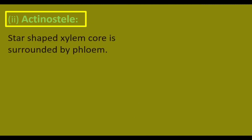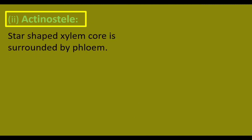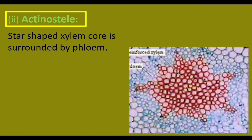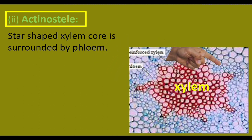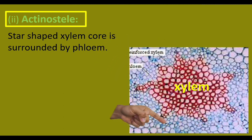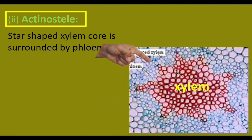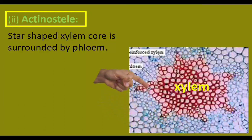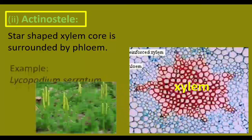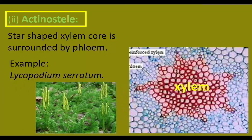Actinostele: a star-shaped xylem core is surrounded by phloem. Here, there is a star-shaped central xylem, and a ring of phloem surrounds it. Example: Lycopodium serratum.